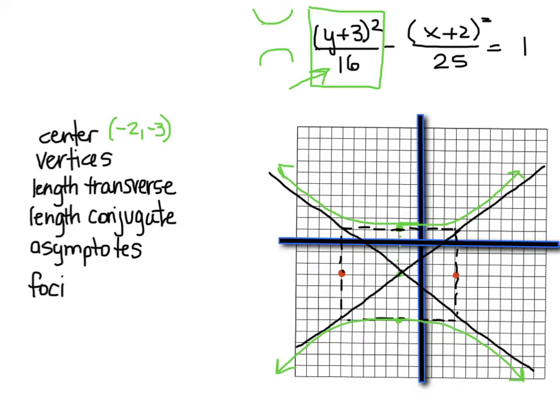So the vertices are the vertices of the branches. So this would be negative 2, 1 and negative 2, negative 7. The transverse axis, the length of it, is the length from vertex to vertex through the center, so that's going to be 8. And the conjugate is just the opposite one, which is going to be 10. The transverse does not necessarily have to be the longest.